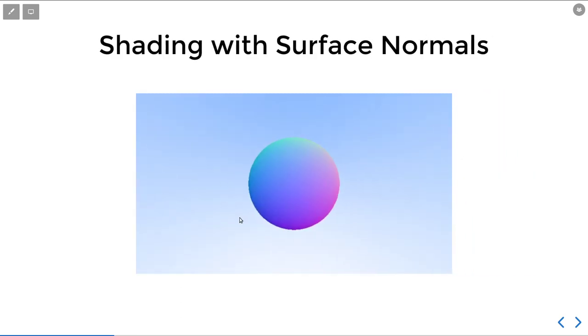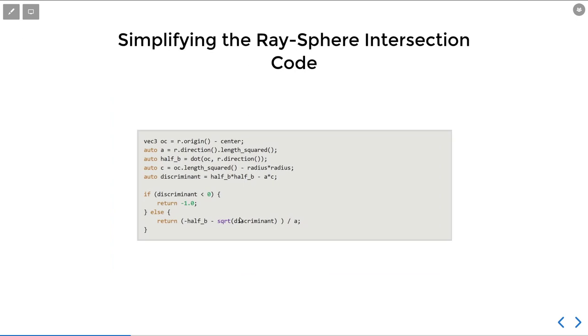Then the book does some refactoring to the ray-sphere intersection code. Instead of calculating b, it's just calculating half b.